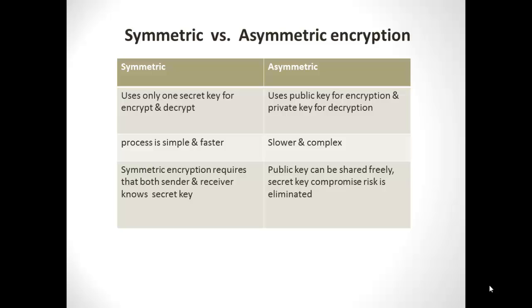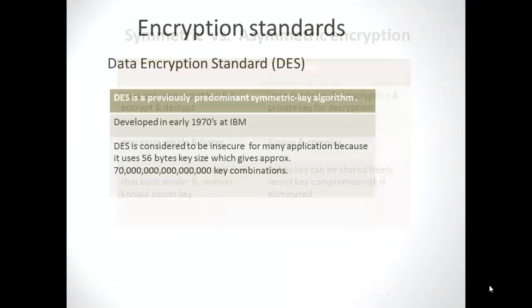The third difference is that symmetric encryption requires both the sender and receiver to know the secret key, which is not secure — if anyone intercepts the secret key during transmission, they will be able to decrypt the content. In contrast, asymmetric encryption does not involve this risk, because only the public key is shared for encryption, while the private key used for decryption is never shared.